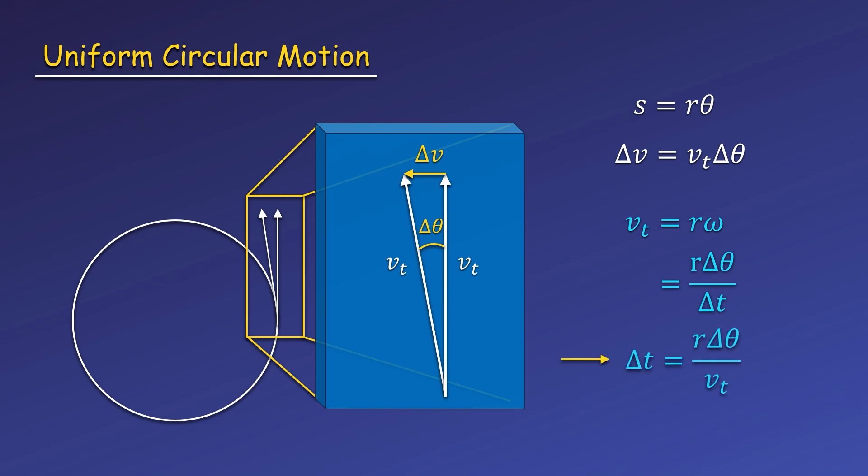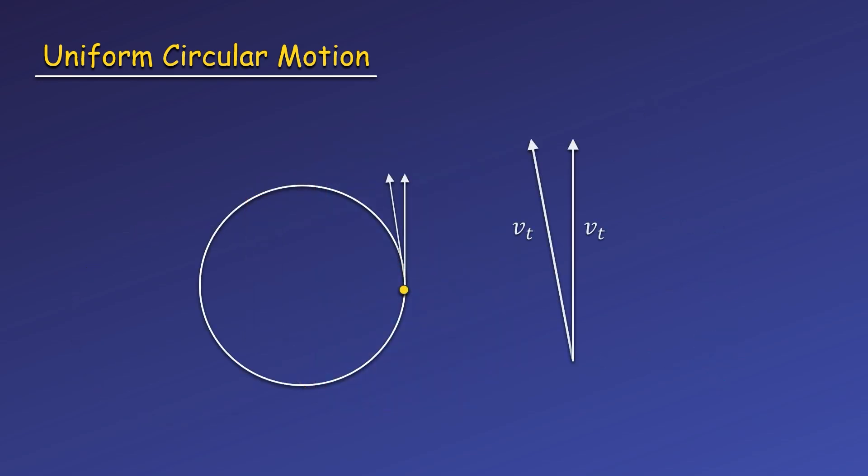Now we're almost ready to find acceleration, but let's first look at the direction while we have this picture. When our tangential velocity is going up, the change in velocity is to the left, so the acceleration will also point to the left. We can do this again at the top of the circle where the velocity is to the left. Here the change of velocity points down, so the acceleration is down. And if we keep going, we find the acceleration is always toward the center of the circle. We call this centripetal acceleration or radial acceleration. Centripetal means center seeking, and radial just means along the radius of the circle. For this reason, we will add a subscript c for centripetal or a subscript r or rad to specify this type of radial acceleration.